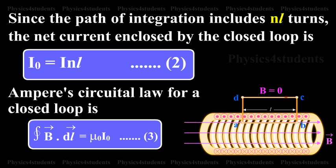Ampere circular law for a closed loop is integral of closed surface vector B dot vector dl equals mu naught into I naught. This is equation number 3.